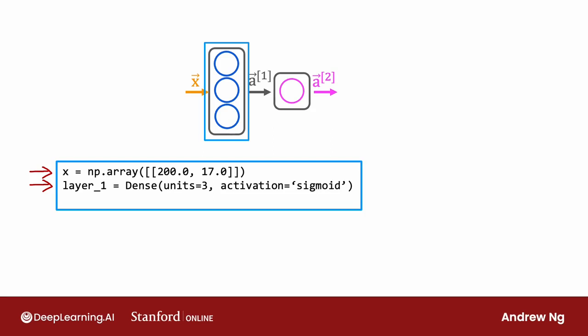And dense is another name for the layers of a neural network that we've learned about so far. And as you learn more about neural networks, you learn about other types of layers as well. But for now, we just use the dense layer, which is the layer type you've learned about in the last few videos for all of our examples. So next, you compute a1 by taking layer 1, which is actually a function, and applying this function layer 1 to the values of x.